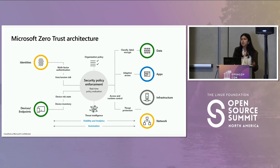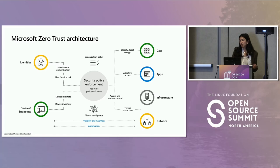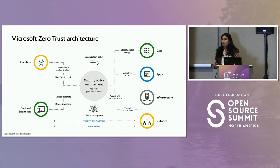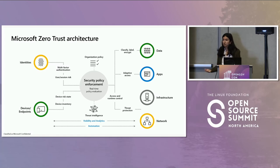The average time between compromise and lateral movement is under two hours — about an hour and 41 minutes. Knowing that, how can we set up our architectures to make it much harder for the adversary to move laterally and expose themselves to more of our networks? Verifying explicitly is about authenticating and authorizing access based on all the data points we have in that moment. Using least privilege is about adaptive policies — things like just-in-time or just-enough access — ensuring the right entity is accessing the right resources at the right time.